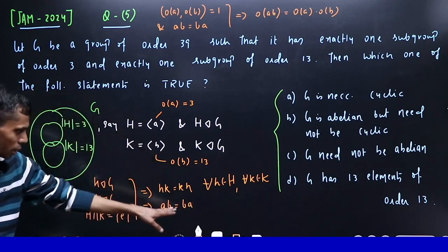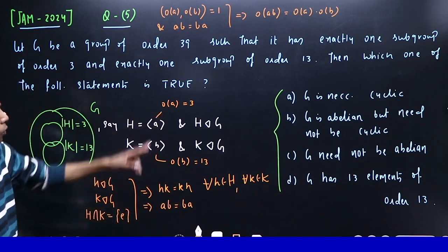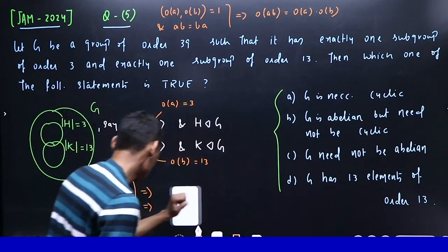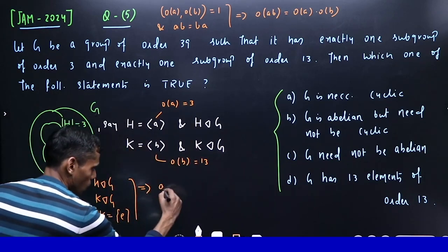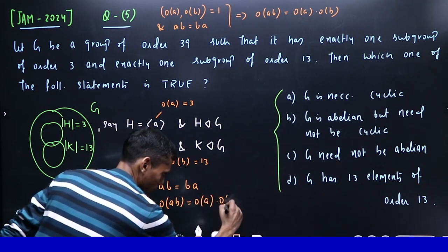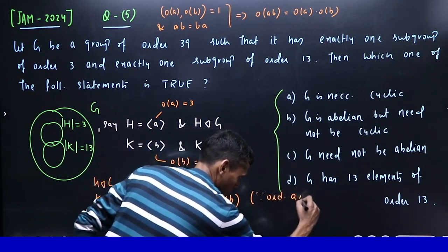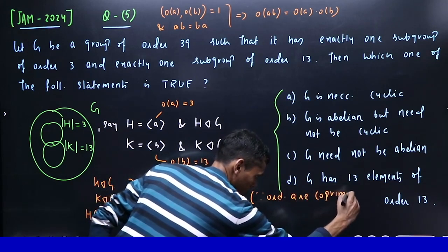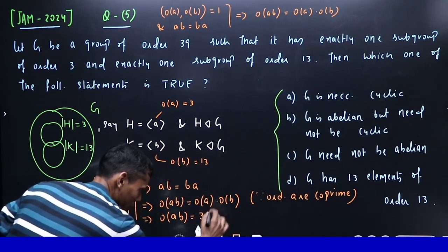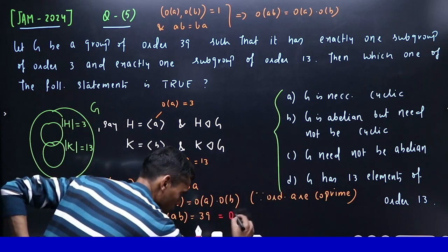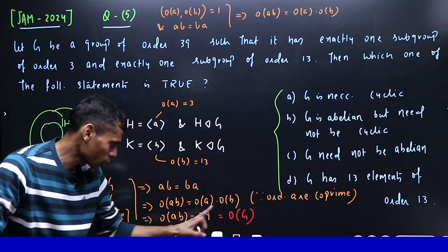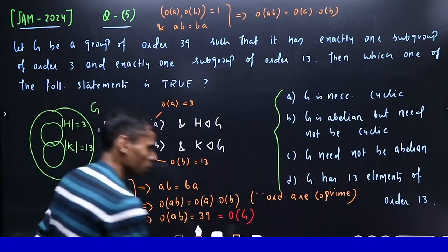ab equals ba, and their respective orders are coprime. This implies order of ab equals order of a multiplied by order of b, since orders are coprime. This implies order of ab equals 39, which is 3 times 13. This 39 is the order of G. So G has element ab whose order equals G's order, therefore G equals the cyclic group generated by ab.